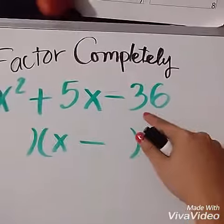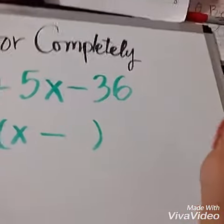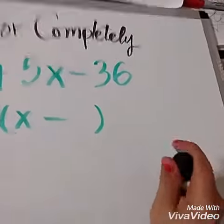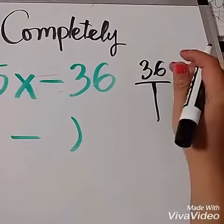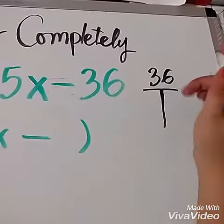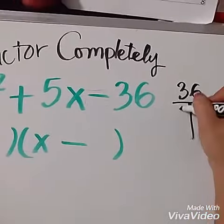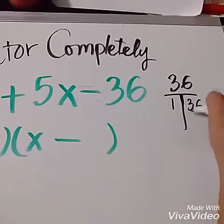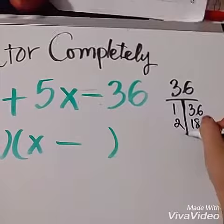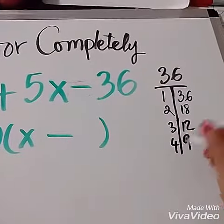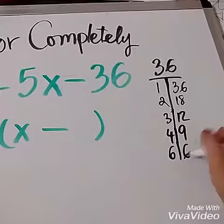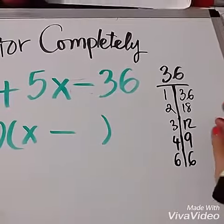So first you factor 36. Get all the factors of 36. This can be done by using a calculator - you can just put 36 divided by x, control T. So 1 times 36, 2 times 18, 3 times 12, 4 times 9, and last one 6 times 6 gives you 36. All right.